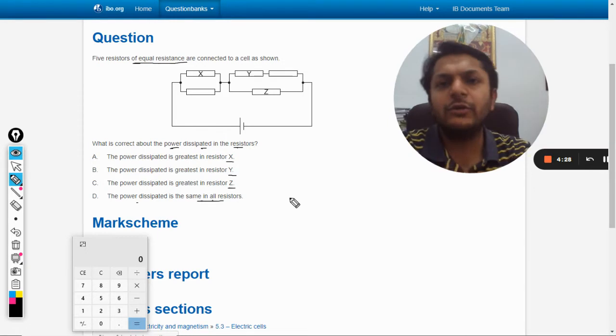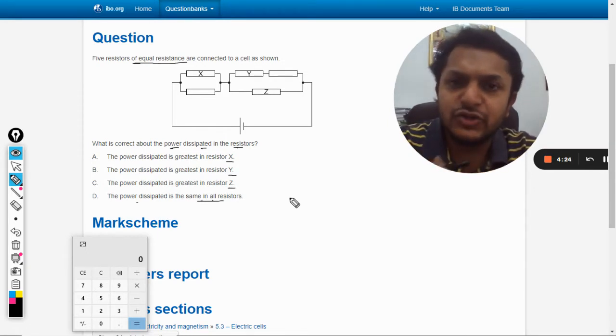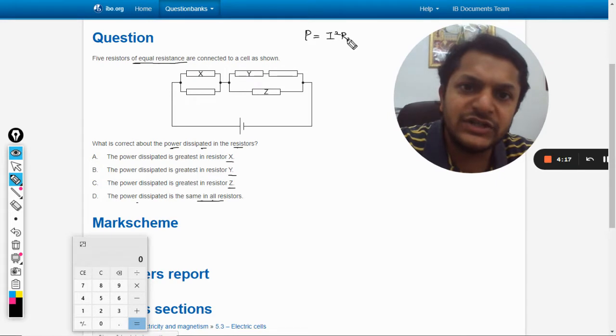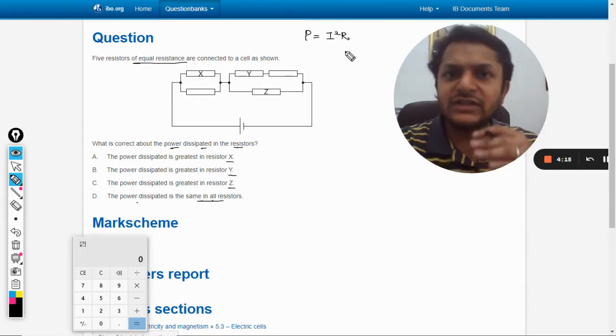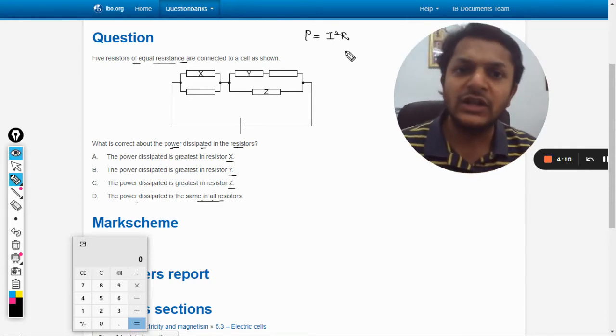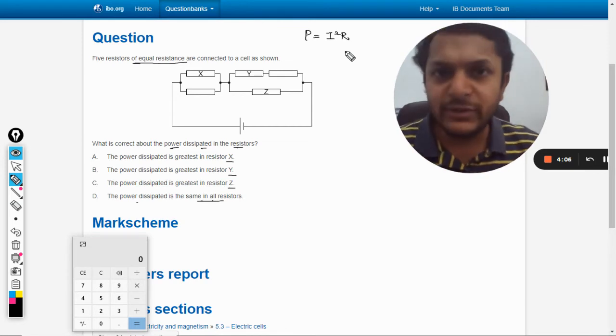We need to comment upon which resistance will be consuming more power. When it comes to power consumption in a resistor, the formula that we use is i² R. So more is the resistance, more is the power. But it is given that resistances are equal. So if more is the current passing through the resistor, more will be the power.